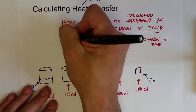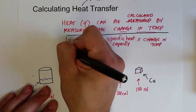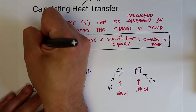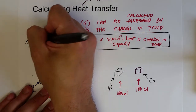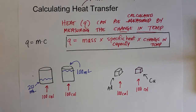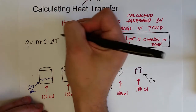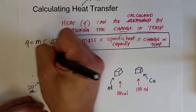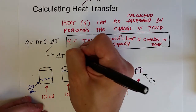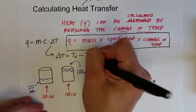The equation is Q equals M times C times delta T, where M is mass, C (or C sub S) is the specific heat capacity, and delta T is the change in temperature. Delta T is always calculated as the final temperature minus the initial temperature.